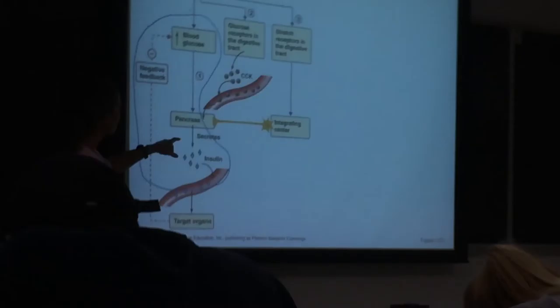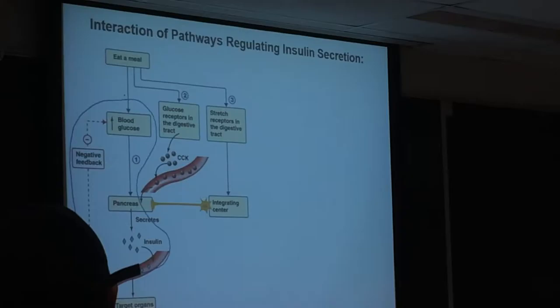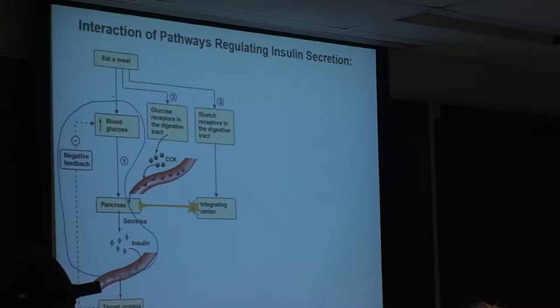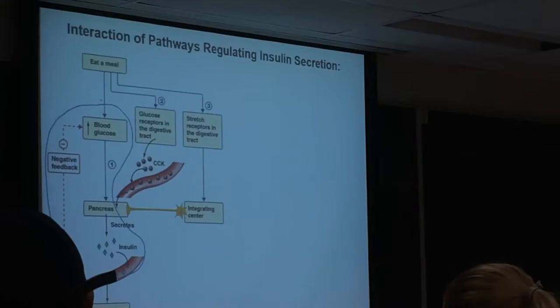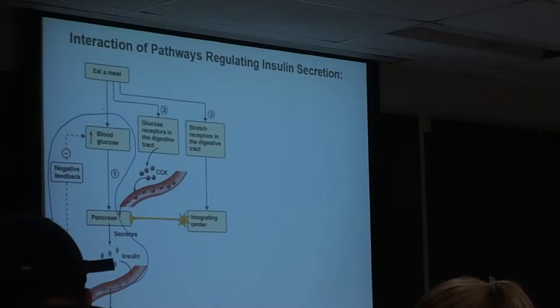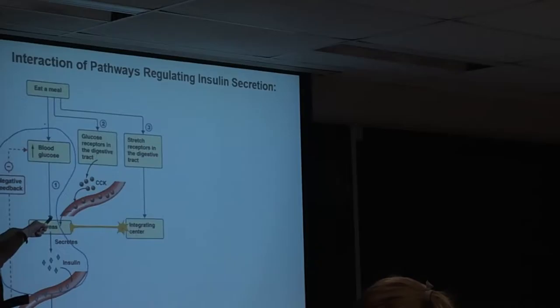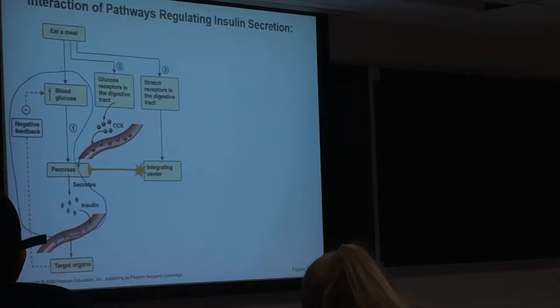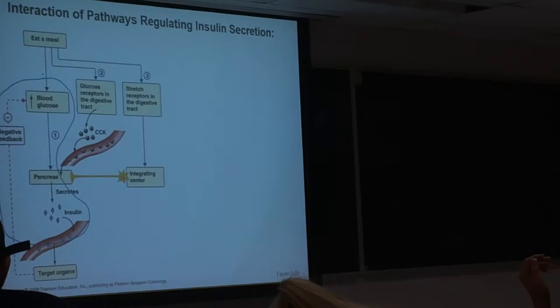Pathway two shows us that within the digestive tract there are cells that also have receptors for glucose. When glucose binds to those cells, they are activated to release hormonal products called cholecystokinin — that's like a gut hormone. We're getting a lot of this cholecystokinin produced locally in the gut in response to the ingestion of glucose in the meal.